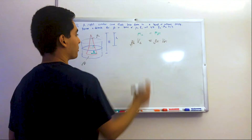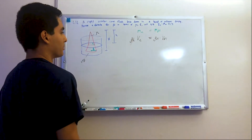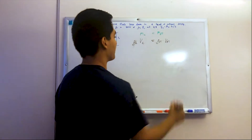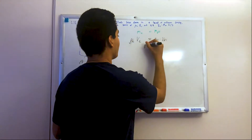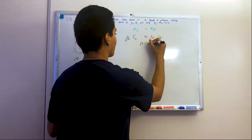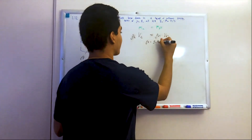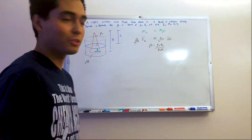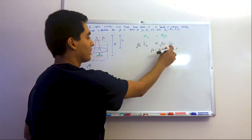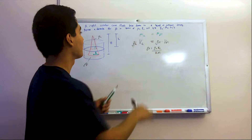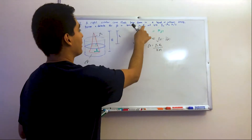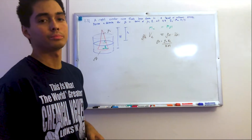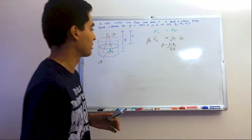We want to solve for rho of the fluid, so rho of the fluid is rho of the cone times the volume of the cone divided by the volume of the fluid. All we have to do is replace each of these terms with functions in terms of radius and height.